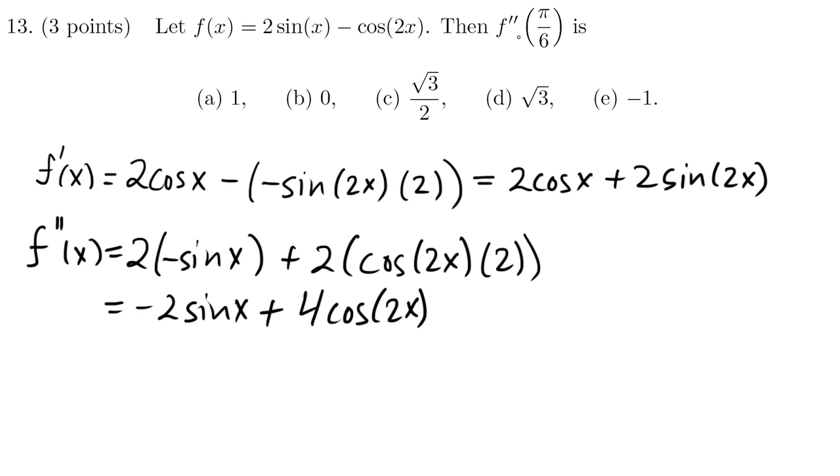And now we're ready to evaluate this. So f double prime of π over 6 is minus 2 sine π over 6, plus 4 cosine of 2 times π over 6, which is 2π over 6, which is π over 3. Now you can use your unit circle or just use your calculator. π over 6 is 30. Sine of 30 is a half. So this is a half.